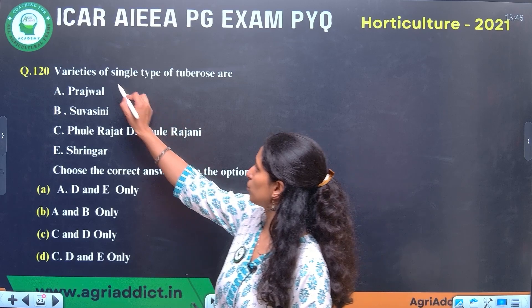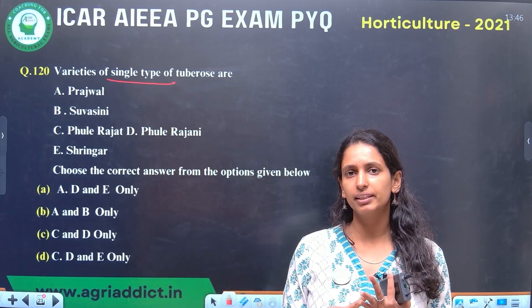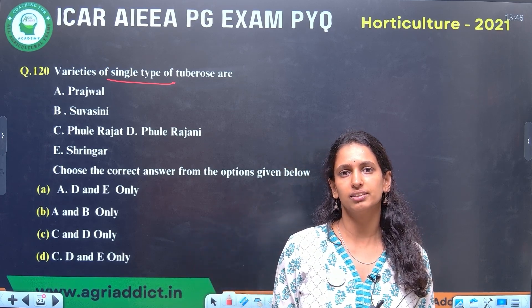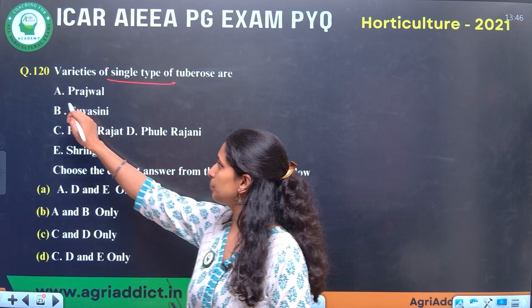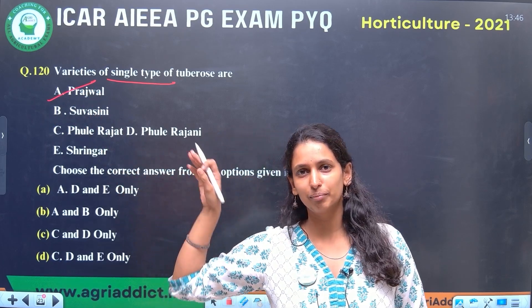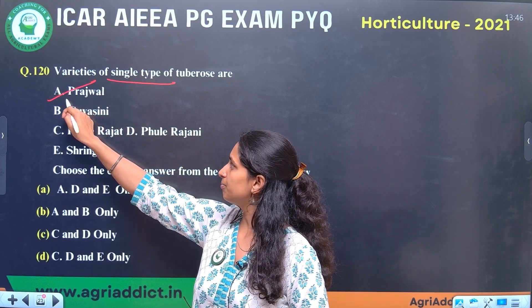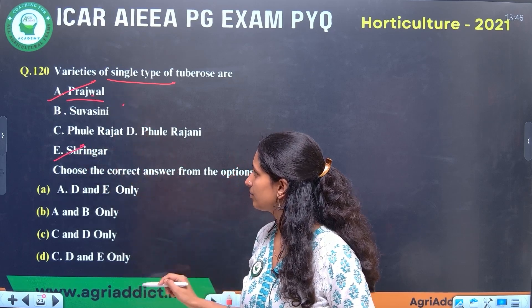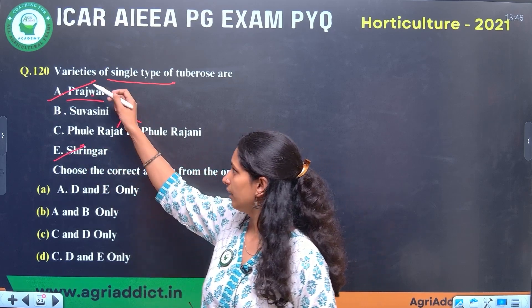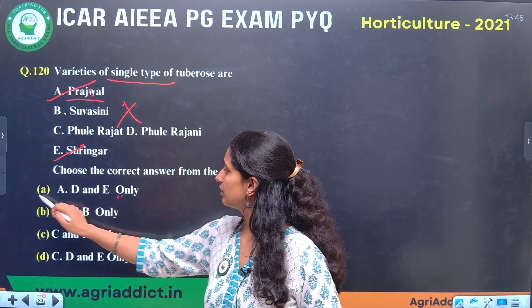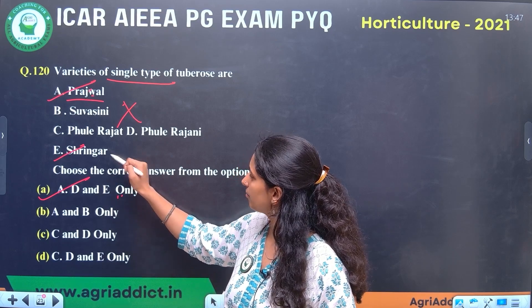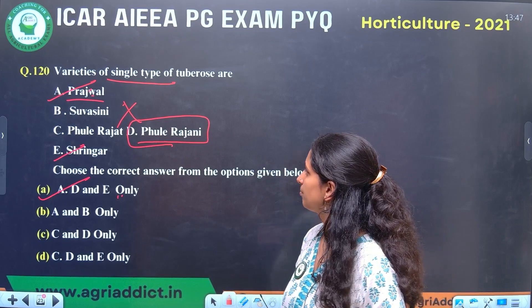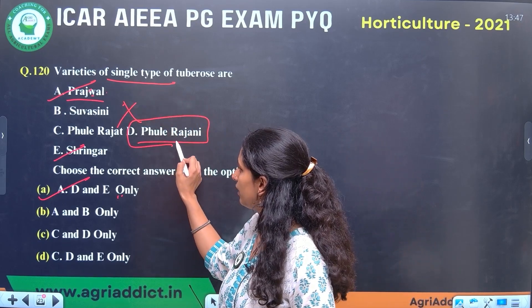Next question: varieties of the single type of Tuberose. Tuberose has mainly single, intermediate, and double types. Single types are used for essential oil extraction and as loose flowers, while double types are used as cut flowers. Prajwal is a single variety, and Shringar is also single. Surekha is double. Pearl Rajani is a single type flower. So Prajwal, Pearl Rajani, and Shringar are single varieties.